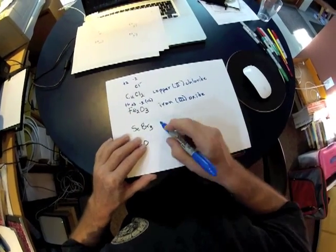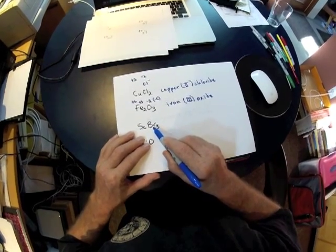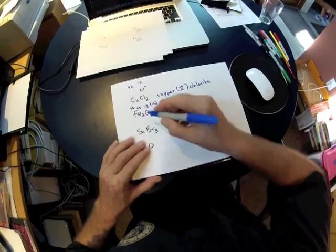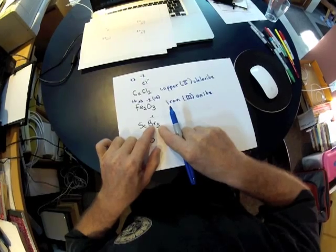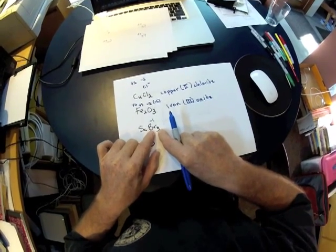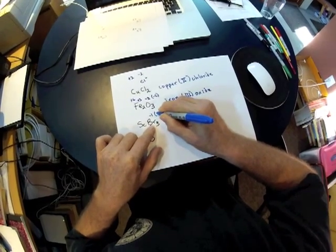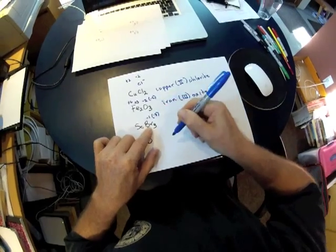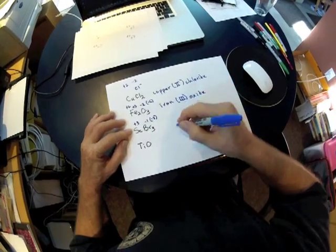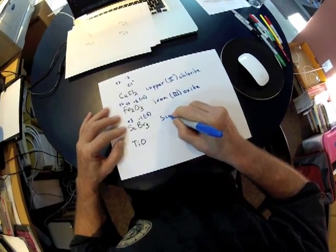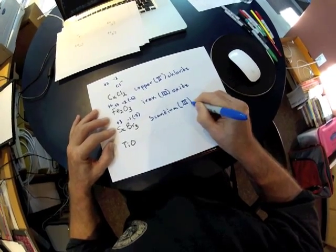Next one down. We have the element scandium, which has been combined with bromide. We remember that bromide is out of group 7A, so it has a charge of minus 1. The subscript in the formula indicates that there's actually three bromides being paired with one scandium. So the net charge, total net charge due to the bromides is going to be minus 3, and that means that the charge on the scandium has to be plus 3. So the name of this compound is going to be scandium 3 bromide.